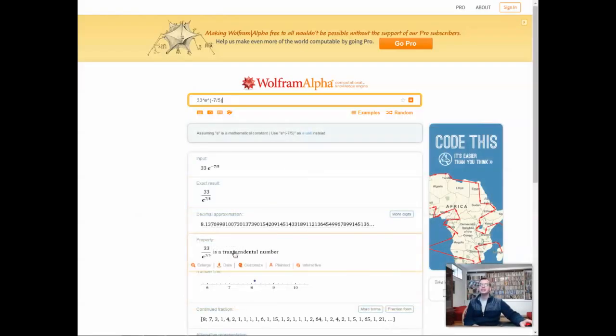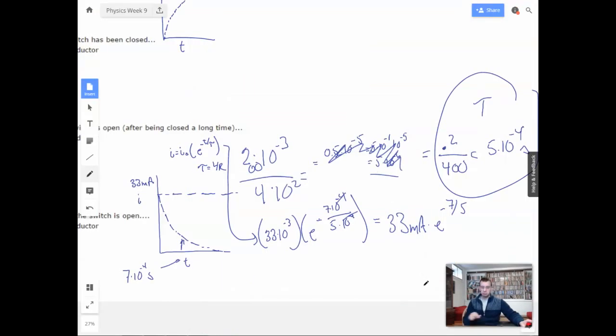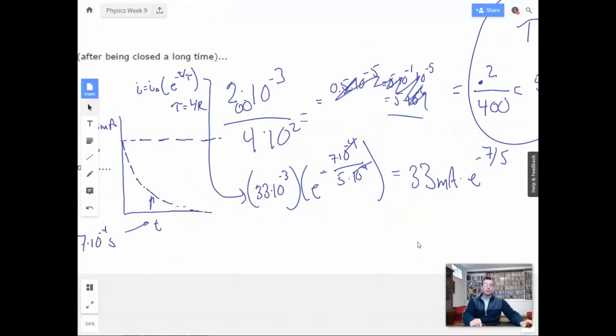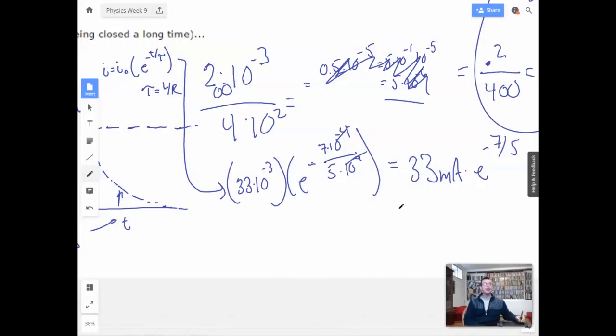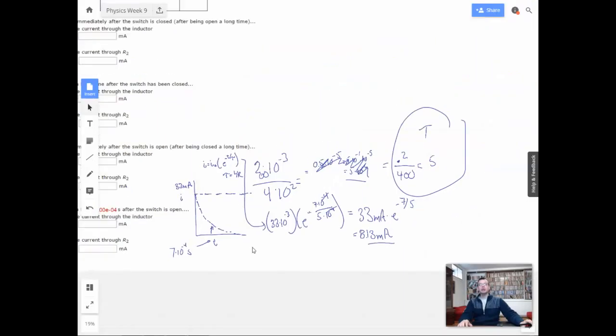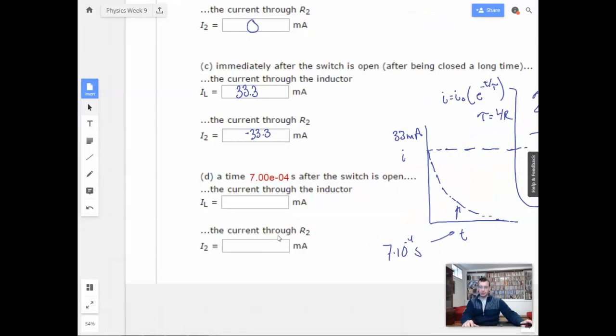Transcendental, sounds so exciting. So I'm going to say 8.13, that seems reasonable. Equals 8.13, that's milliamps. That's believable. So it's down to a quarter.